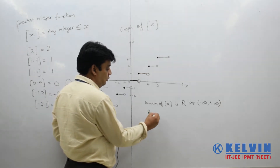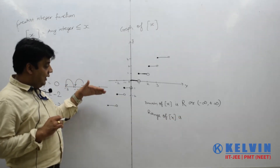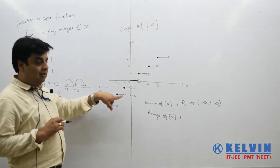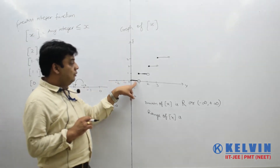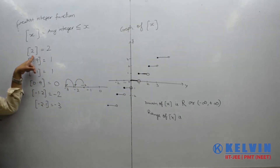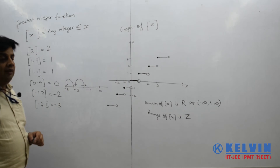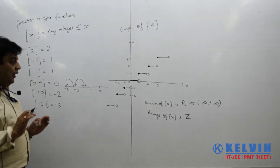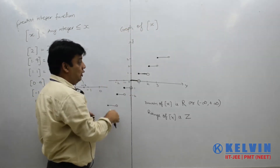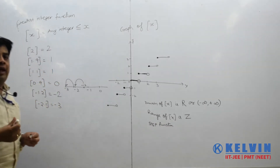Now the range of Greatest Integer of x. Whether we put an integer or non-integer value of x, the answer is always an integral value: minus 3, minus 2, minus 1, 0, 1, 2, 3 — only integers come out. So the range of this function is Z, the set of all integers, both positive and negative. This is also why Greatest Integer x is known as the step function.